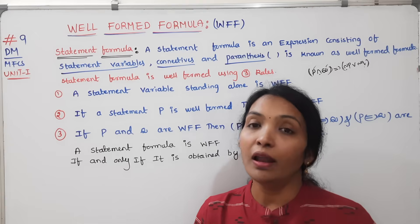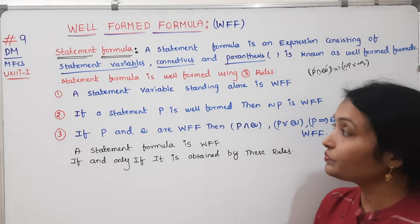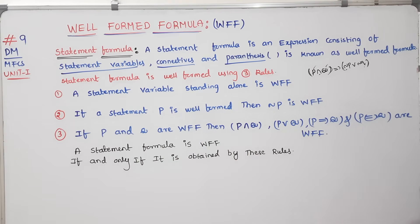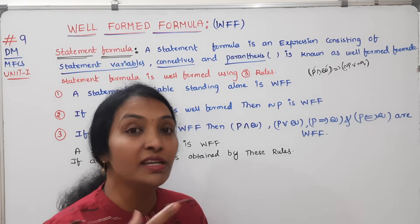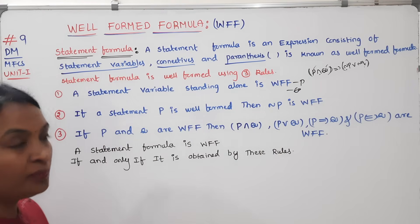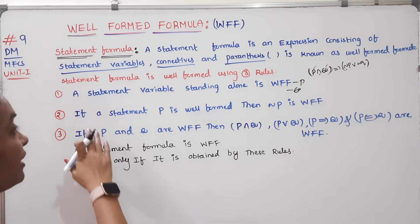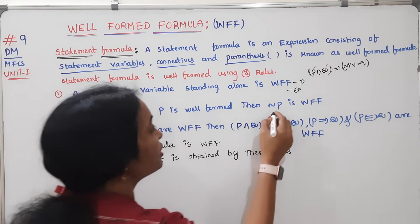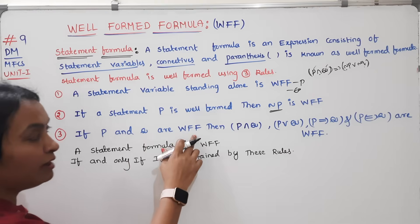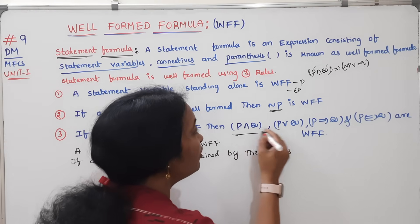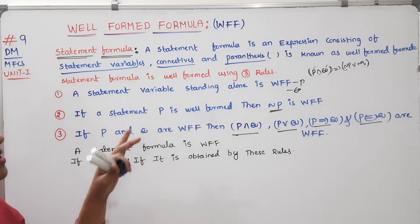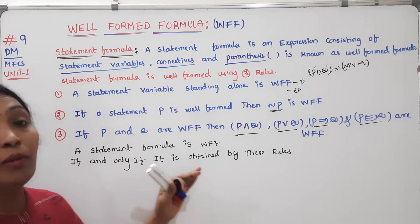The statement formula is a well-formed formula if it satisfies three properties. First, a statement variable standing alone by itself is well-formed. Second, if statement P is well-formed, then negation P is also well-formed. Third, if P and Q are well-formed, then P∧Q, P∨Q, P implies Q, and P bi-implies Q are all well-formed.